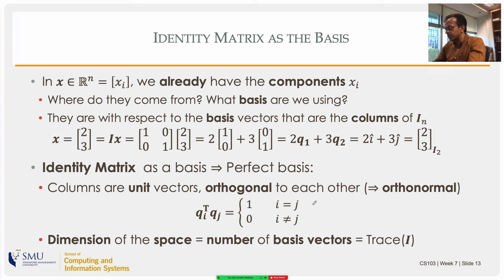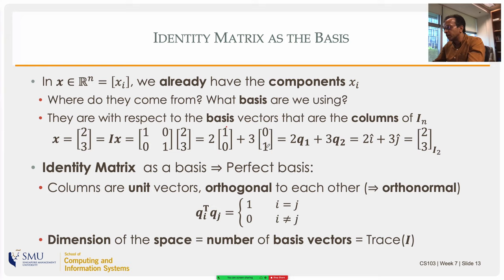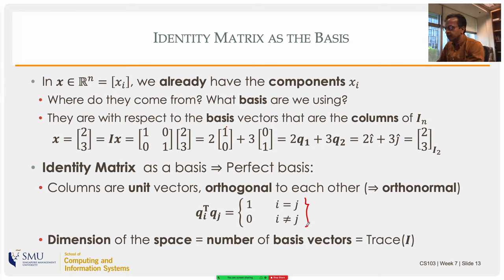We can write the orthonormality condition as: q_i^T q_j = 1 when i = j, and 0 when i ≠ j. For example, q1^T q1 = 1×1 + 0×0 = 1, and q1^T q2 = 1×0 + 0×1 = 0. So these vectors are more than just orthogonal — they are orthonormal: orthogonal to each other and also normalized. There's also an interesting fact that the dimension of the space equals the number of basis vectors, which is the same as the trace of the identity matrix.